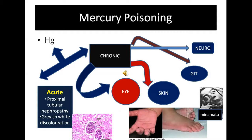There is also a coarse intentional tremor seen due to chronic mercury exposure, known as the Danbury Tremor, Hatter's Shake, or Glass Blower's Shake. In severe cases, this can lead to concussio macularis or shaking palsy.